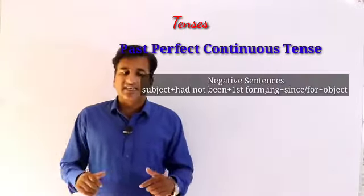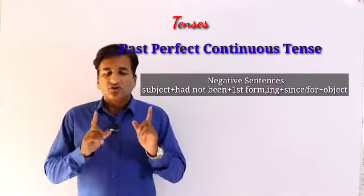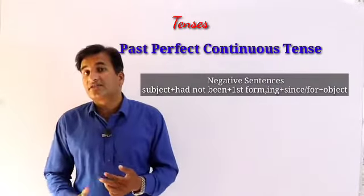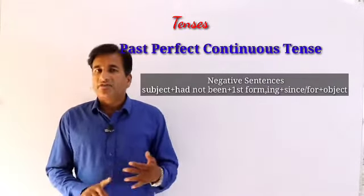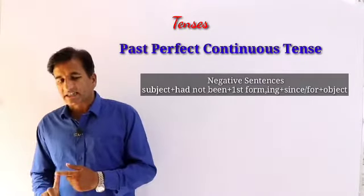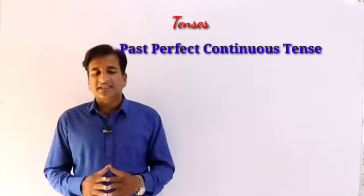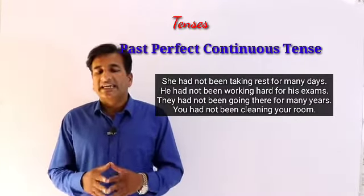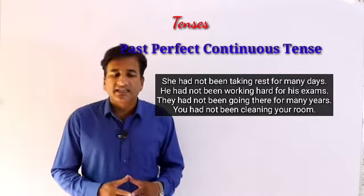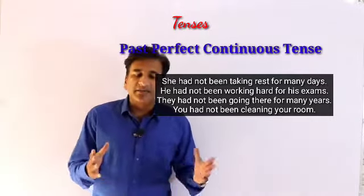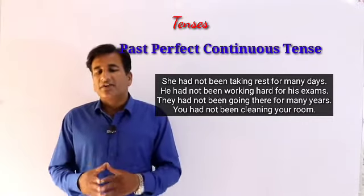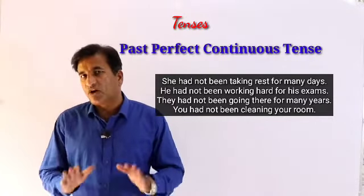اب ہم دیکھتے ہیں negative sentences۔ Negative sentences میں Subject + helping verb 'had not been' + first form of verb with -ing + object آئے گا۔ Example: 'She had not been taking rest for many days' — وہ کئی دنوں سے آرام نہیں کر رہی تھی۔